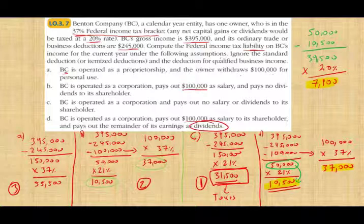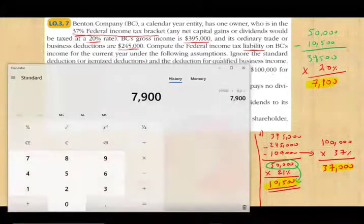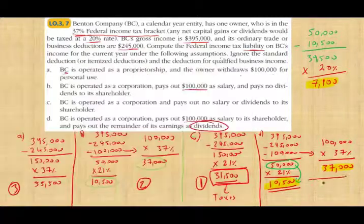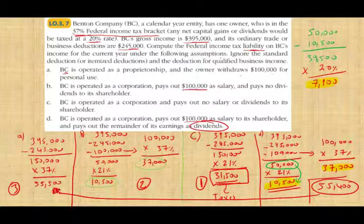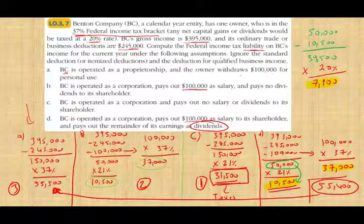Adding everything up under scenario D: $7,900 plus $37,000 plus $10,500 equals $55,400 total. This is still slightly less than scenario A's $55,500 — $100 less, though mathematically still lower. There are other factors to consider when deciding whether to incorporate, but this exercise demonstrates computing taxes under various entity scenarios.